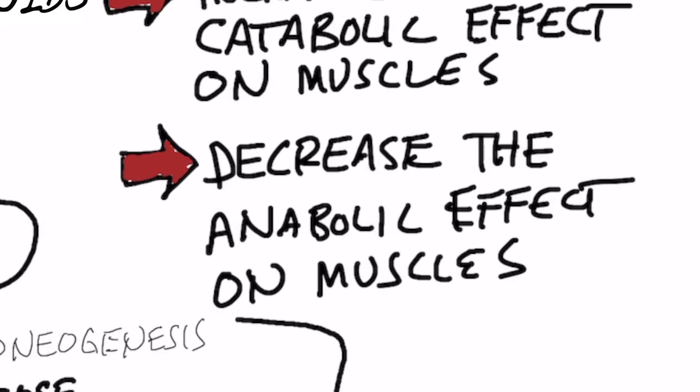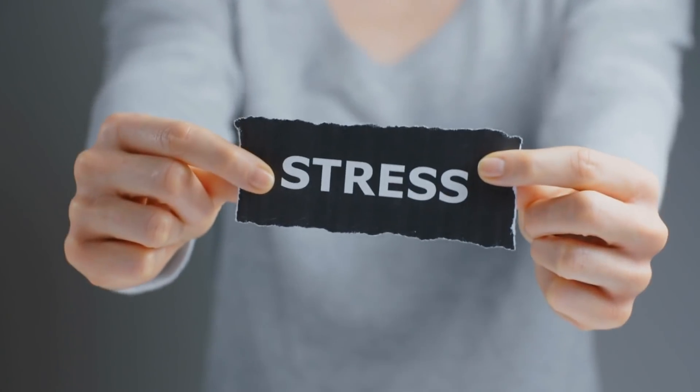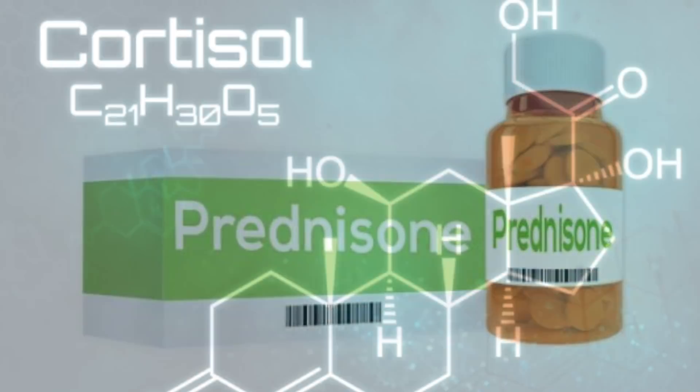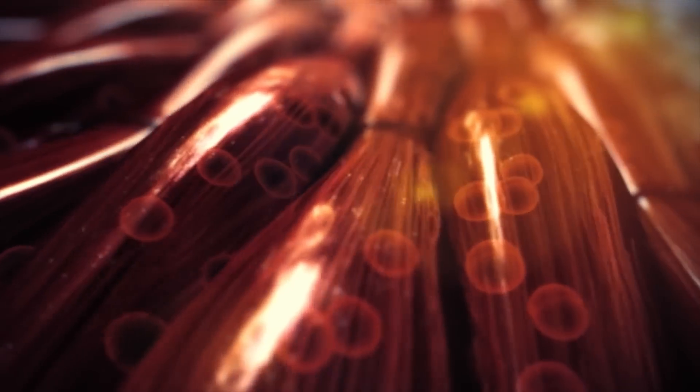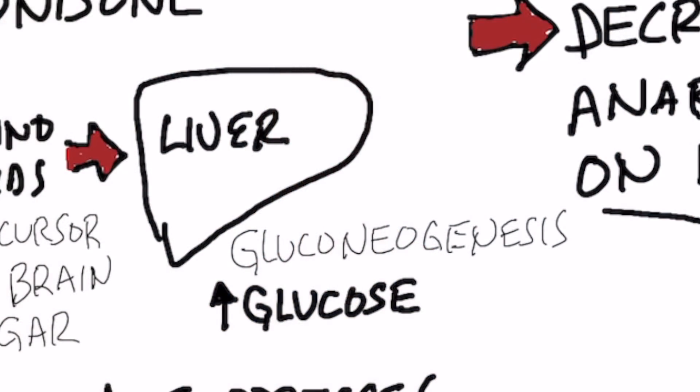If we look at the chain of events: increased stress, prednisone, or elevated cortisol from another reason — maybe a tumor on your adrenal or whatever — targets the muscle and you start getting atrophy. What's happening is the muscle is turning into amino acids, which are there as a precursor to make new glucose in the liver. That's called gluconeogenesis — neo meaning new, genesis meaning the creation of — so we're making new glucose from non-carbohydrate sources.